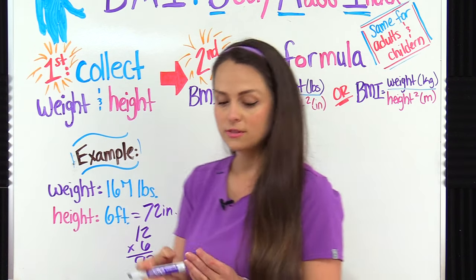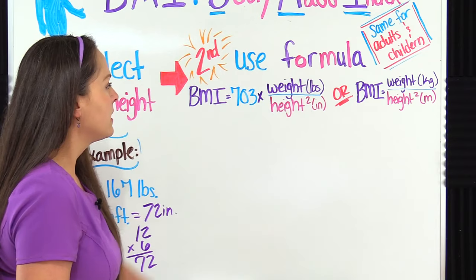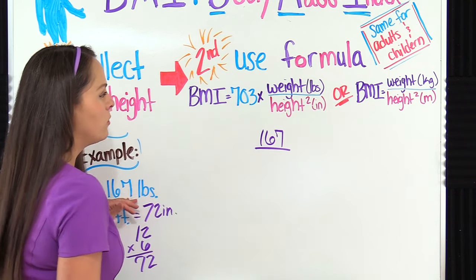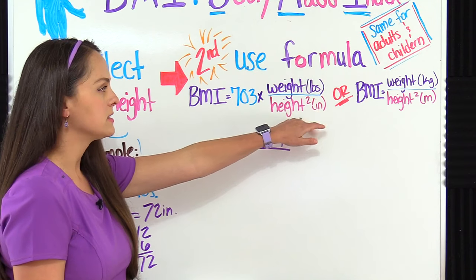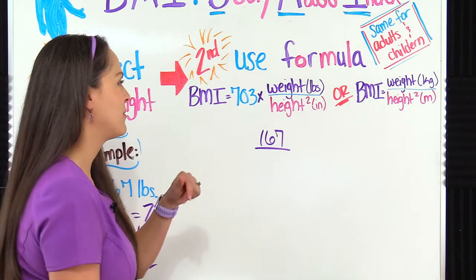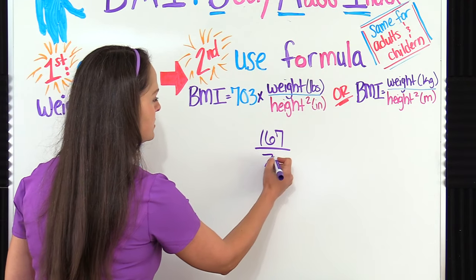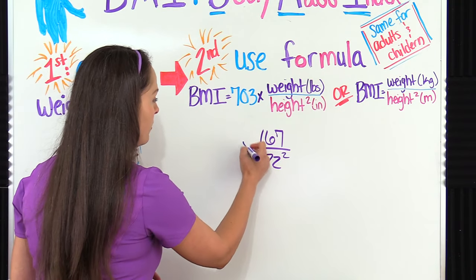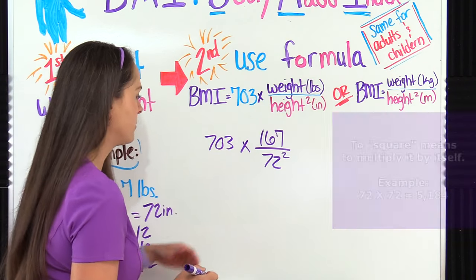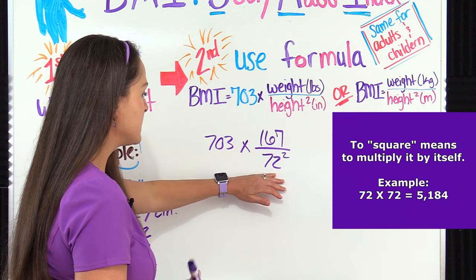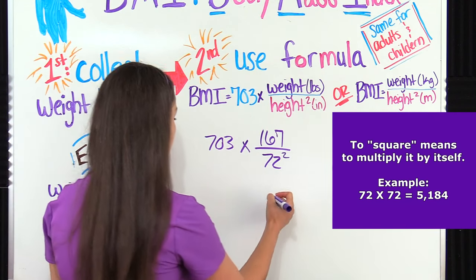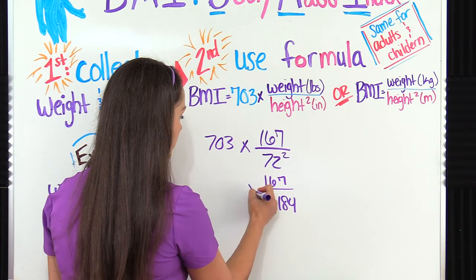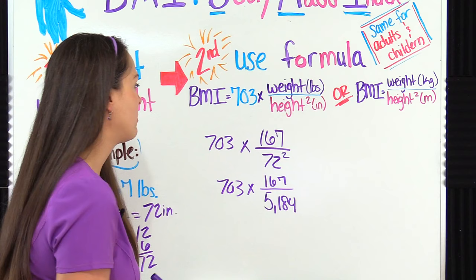Now we are ready to use our formula. First let's plug in our weight which was 167 pounds. So 167 and we are going to divide that into the height in inches but it's going to be squared. Don't forget to bring down your square part because that's the part you could easily forget. So we're going to put in 72 inches, that's what we just figured out with our conversion, and we're going to square that. And we're going to multiply that by 703.